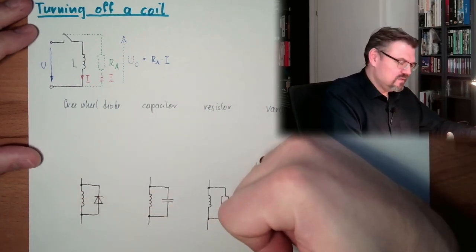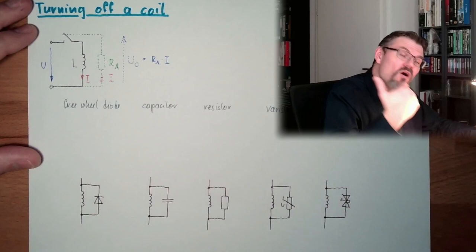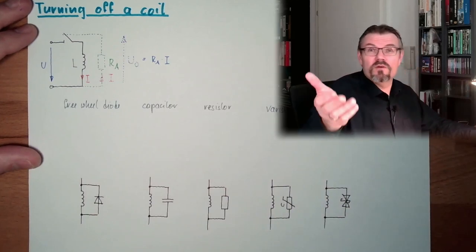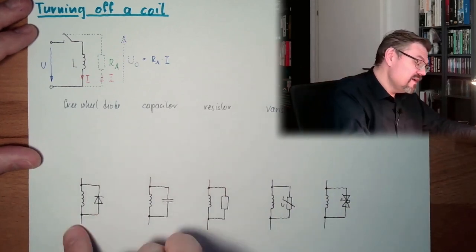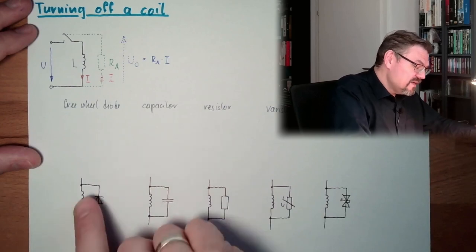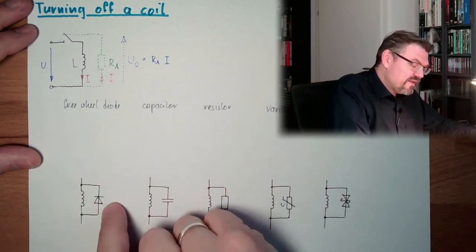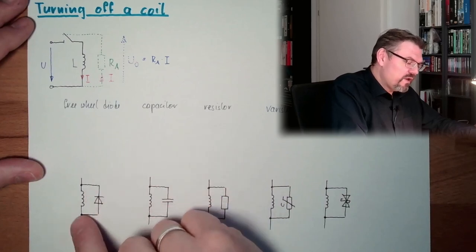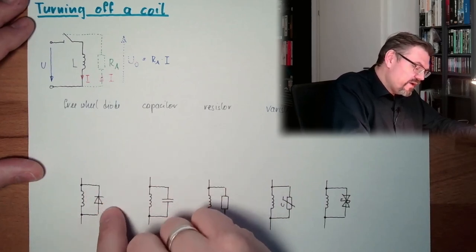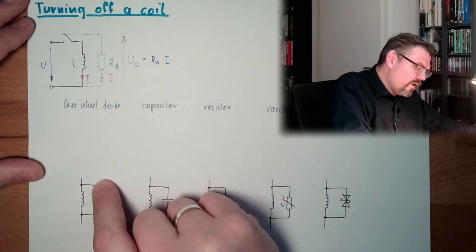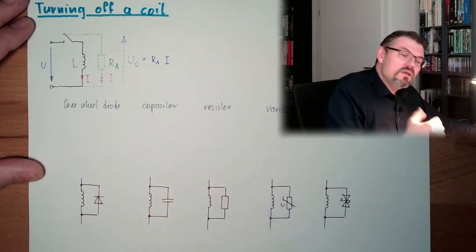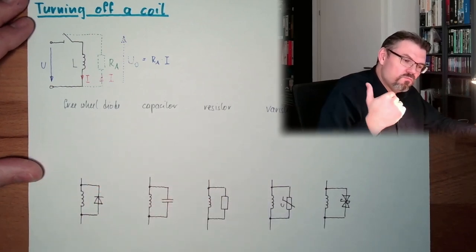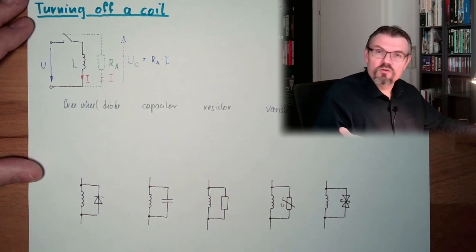And now I explain what is behind those methods. Freewheel diodes. This is the first method, easy method, often used when switching off relays, for instance, coil off relays. Freewheel diodes, just put in a diode, a diode is an element which will only be conductable in one direction. This time, in this direction, current can only go from down to up. From up to down, it's blocked. It's acting like a non-return valve.